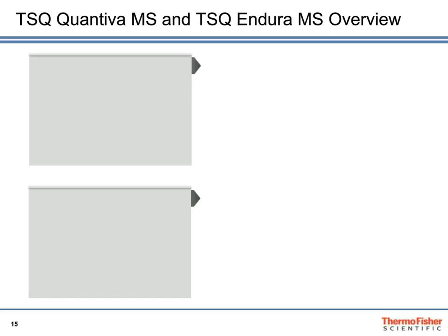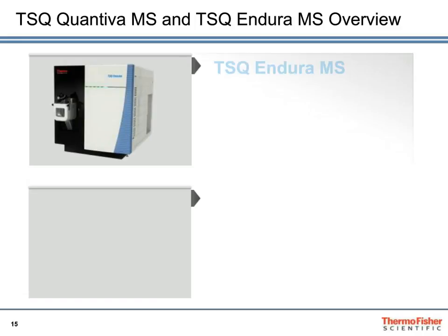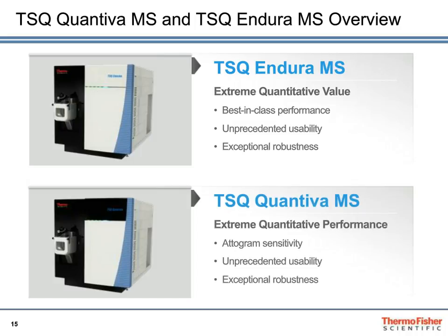Now I'd like to hand over the presentation to my colleague, Dr. Jonathan Beck, from the IC-MS Environmental Food and Safety Marketing. As Terry mentioned, we're going to use mass spectrometers as our detector in this method. We're currently offering three different triple quadrupole mass spectrometers from Thermo Fisher, and two of them are shown on this slide: the TSQ Endura MS and the TSQ Quantiva MS. For this application, we're going to use the TSQ Endura MS — our mid-tier mass spectrometer — which offers the sensitivity and performance needed for the detection of these haloacetic acids, paired with the ICS-5000+ that Terry described.